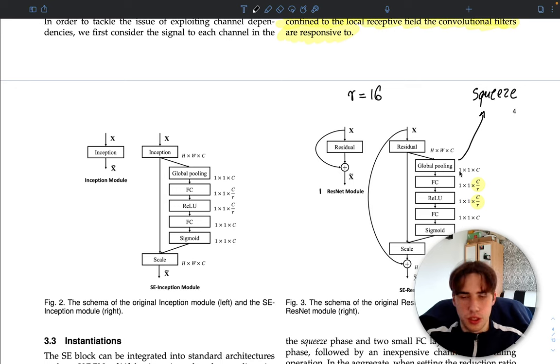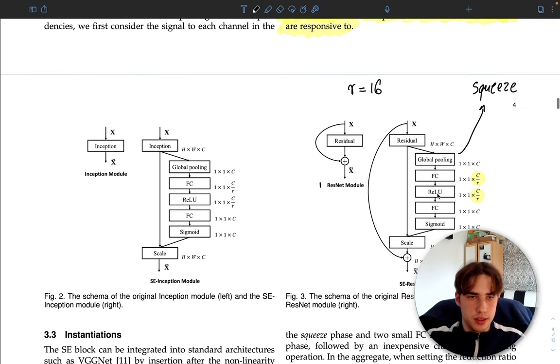What they do first is global pooling - this is the squeeze operation. For each channel we get the average values for each feature map. Then we have the fully connected layers which are scaled by the r parameter, which we're going to discuss later. It's because of computational reasons - they need to scale it down. The fully connected layers find this dependency between channels. Then we add non-linearity to the network, then another fully connected layer which again finds these connections and also brings the shape back to the shape of the channels.